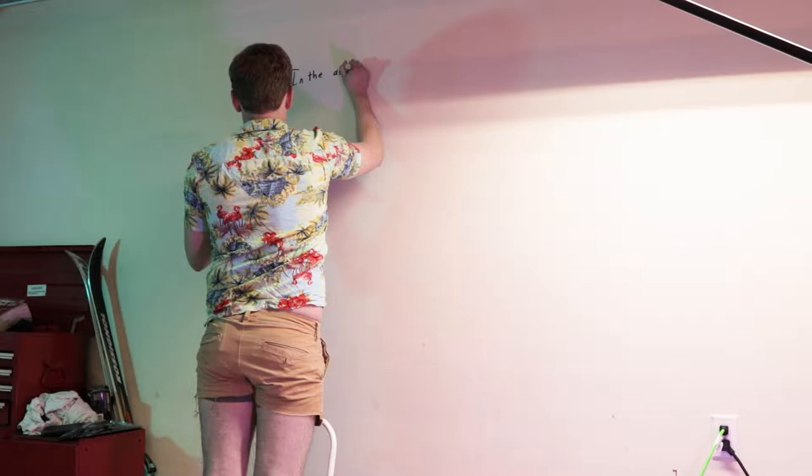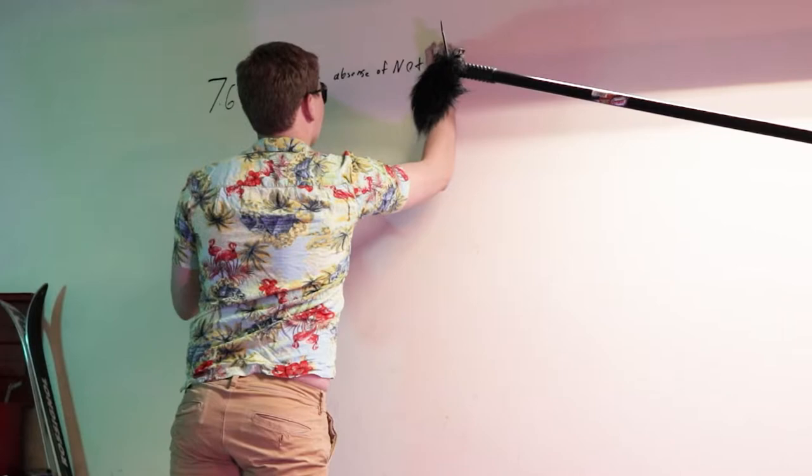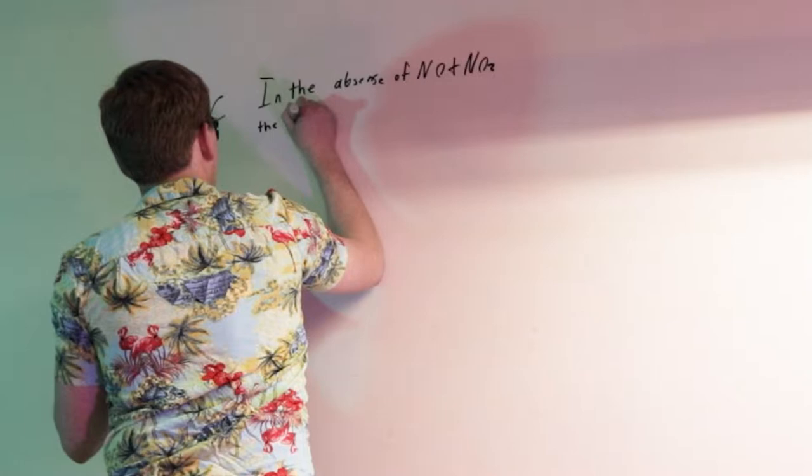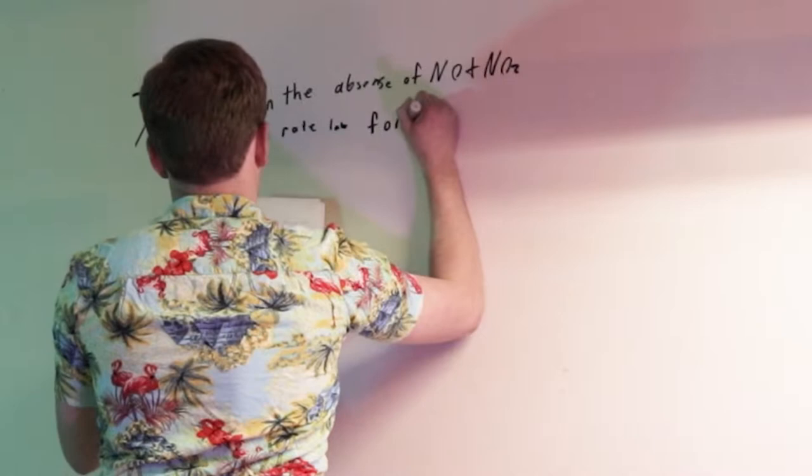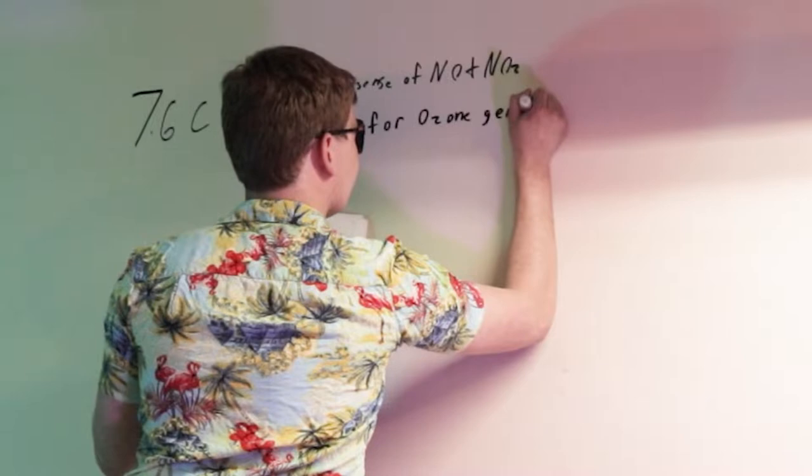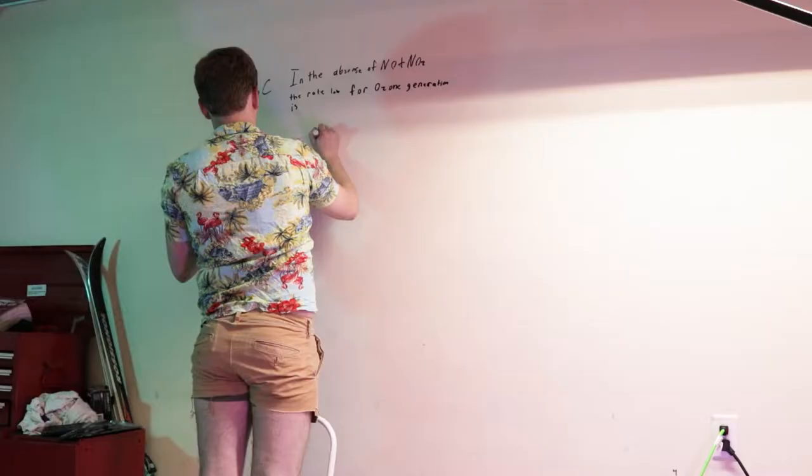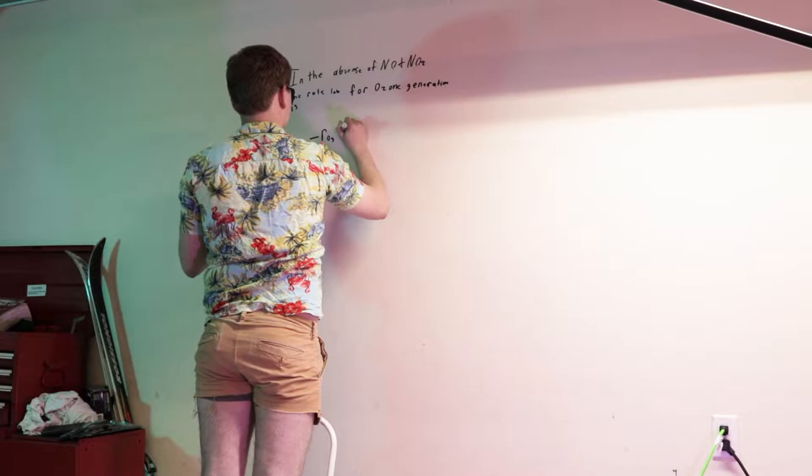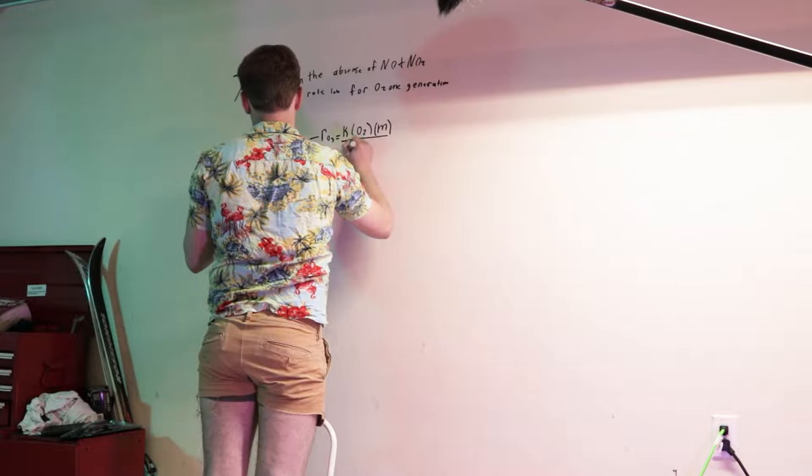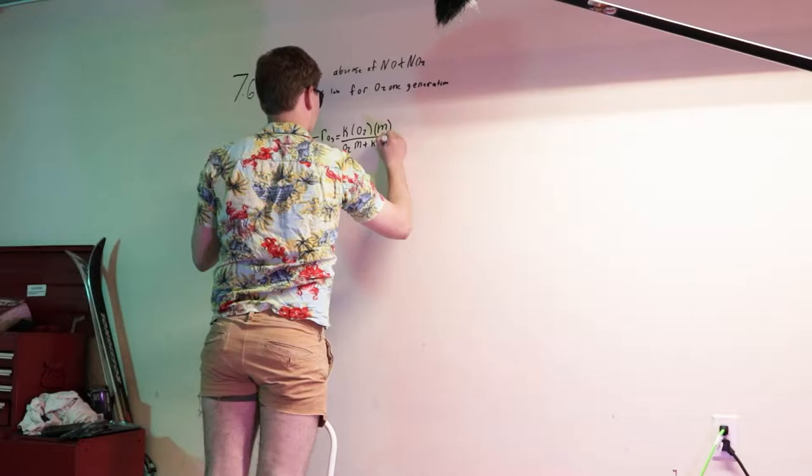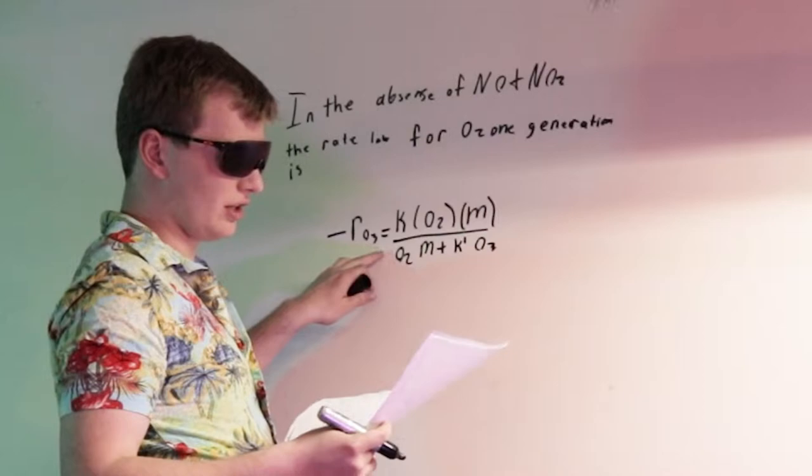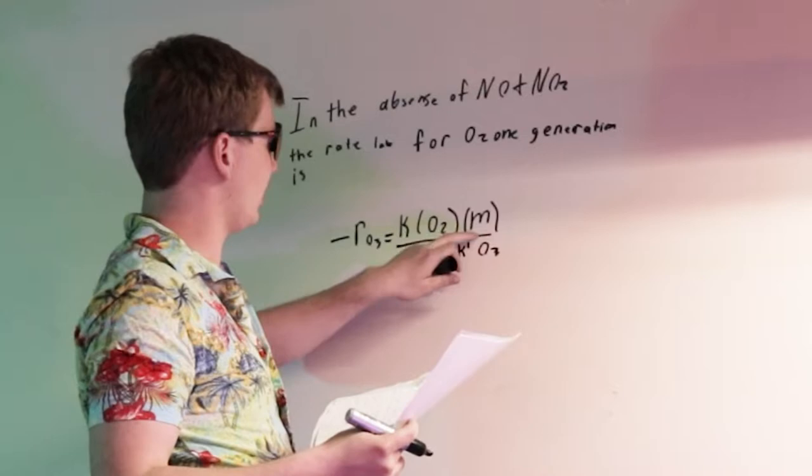So in the absence of NO and NO2, the rate law for ozone generation is the following equation. It states that the rate law of O3 is equal to K times O2 times M all divided by O2 times M plus K prime times O3.